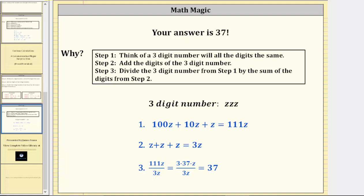And we can simplify this fraction because 111 is equal to 3 times 37. And in this form, 3 divided by 3 is equal to 1, and so is z divided by z. And notice how the result is always 37.